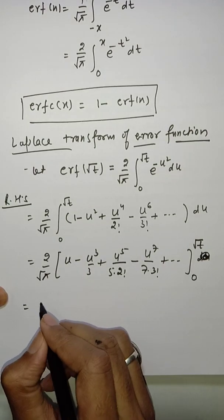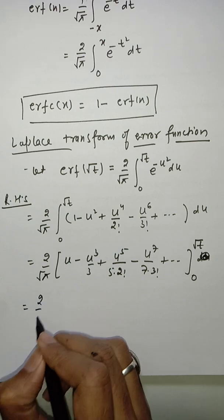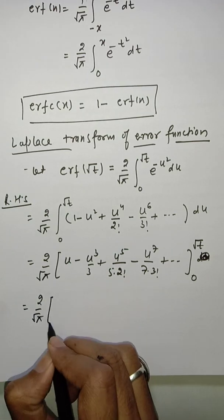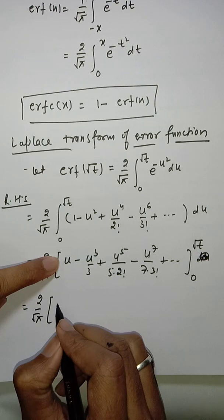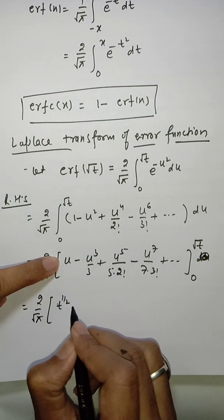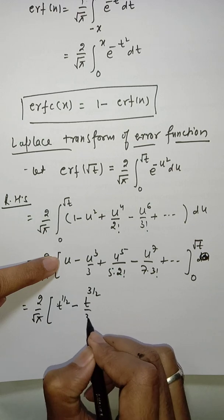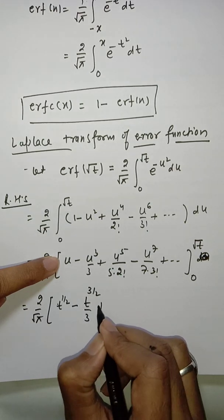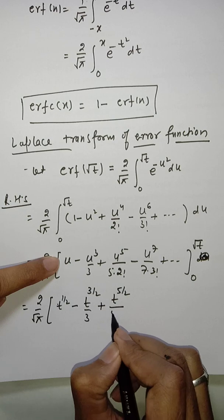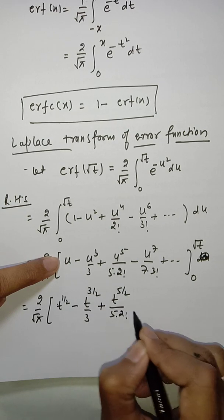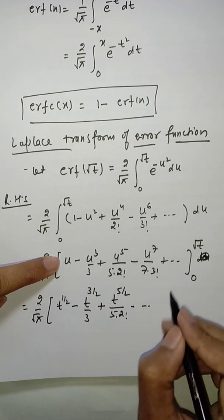This equals (2/√π) × [t^(1/2) − t^(3/2)/3 + t^(5/2)/(5·2!) − ...] after substituting the upper limit √t and noting the lower limit 0 contributes nothing.